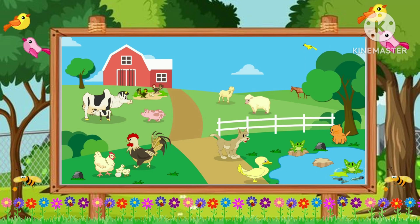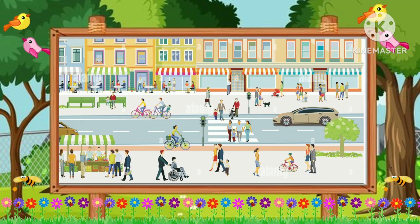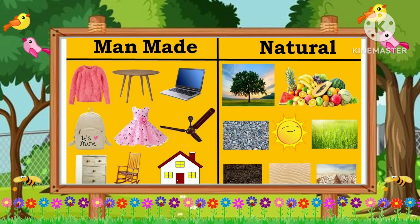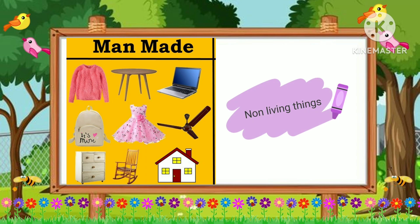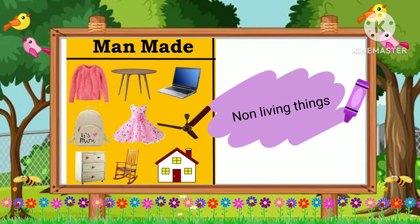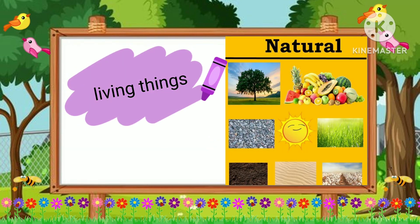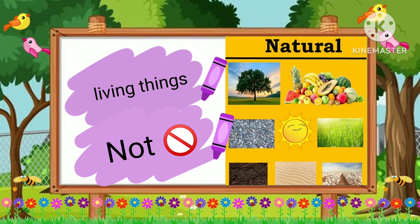We see many kinds of things around us. These things can be divided into two: natural things and man-made things. All the man-made things are non-living things, but some natural things are living while some are non-living.